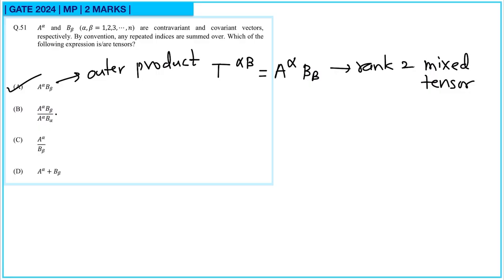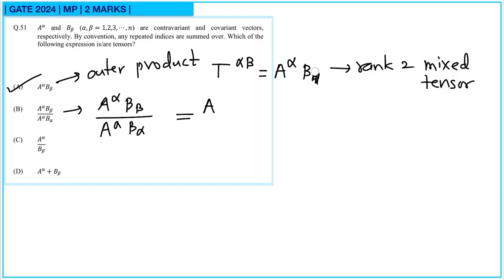For option B, we have A^α B_β divided by A^α B_α. The denominator A^α B_α is a contraction, giving a scalar, which is rank-0. So the expression equals A^α B_β divided by a scalar, which still gives T^α_β — a tensor. So option B is also correct.